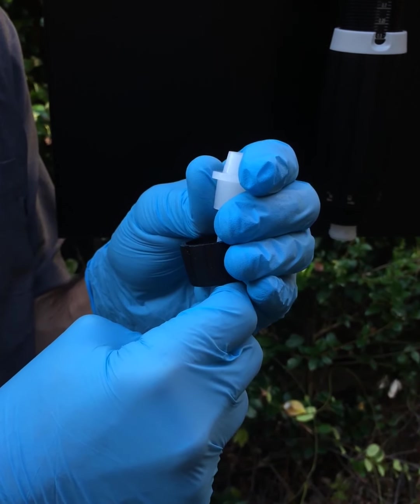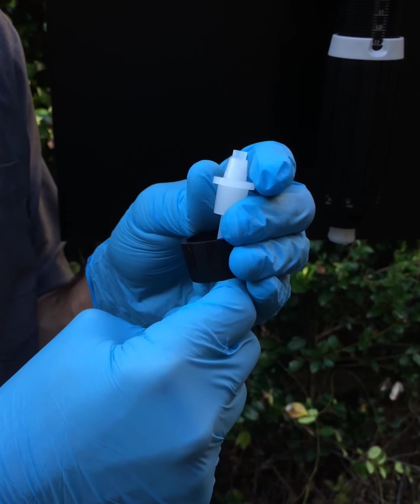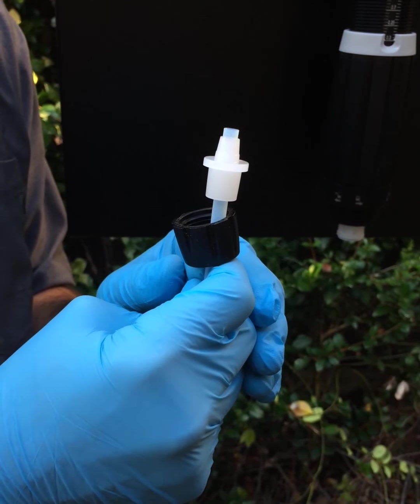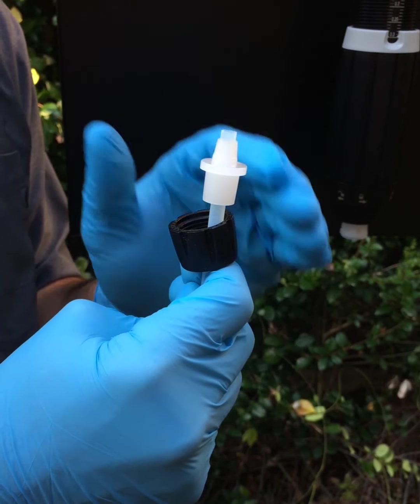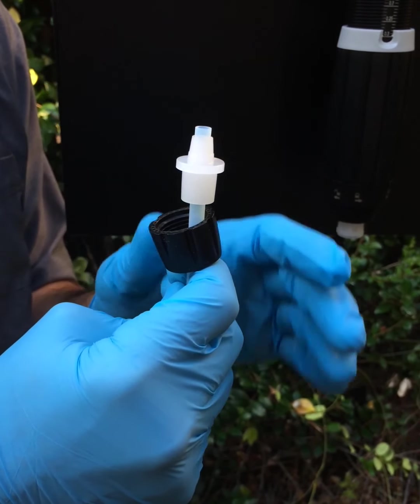Push the hose slightly through the end of the ferrule so that a small bit is exposed. Make sure that the hose is cut level and squared off.